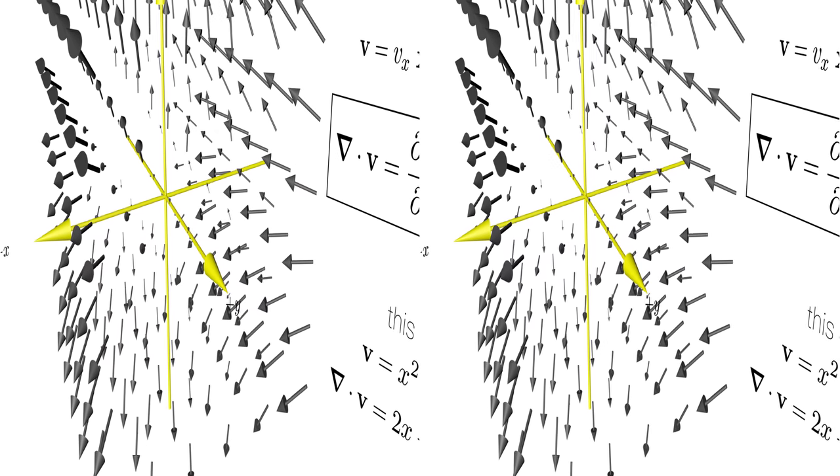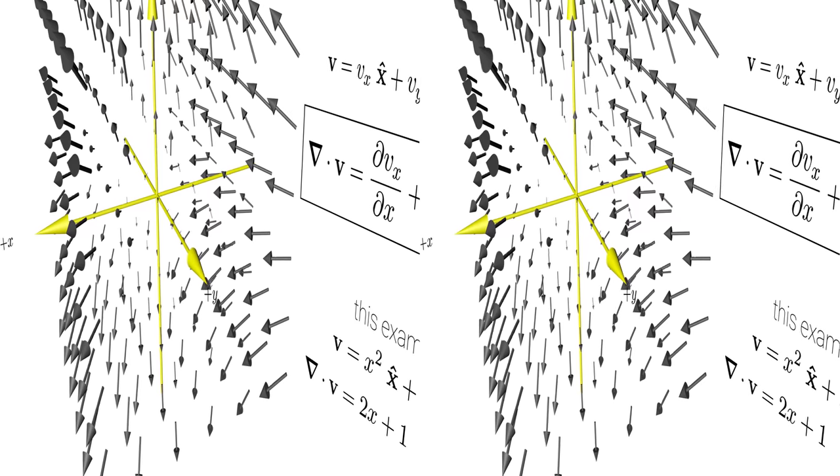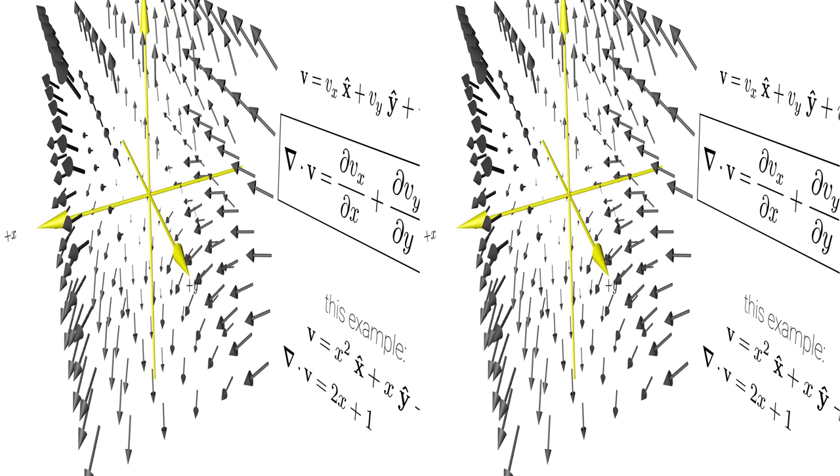If for every individual point you sum over all those relative changes in every direction, you get a scalar quantity that reflects the extent to which the field diverges outwards in that particular point.